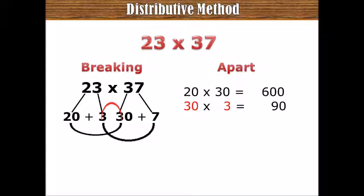Then, we have 3 times 7. 3 times 7 equals to 21.